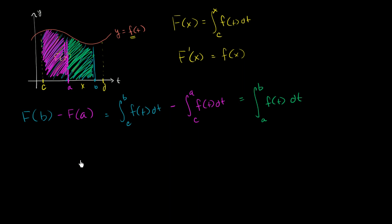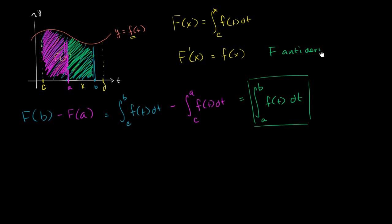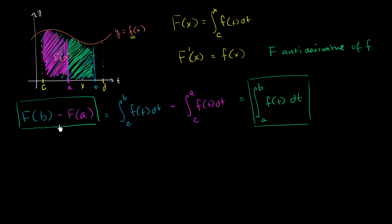This right over here is the second fundamental theorem of calculus. It tells us that if f is continuous on the interval, this is going to be equal to the antiderivative — or an antiderivative — of f. And we see that capital F is the antiderivative of f. The fundamental theorem of calculus tells us that capital F is an antiderivative of lowercase f. So if you have a definite integral like this, it's completely equivalent to an antiderivative evaluated at b, and from that, you subtract it evaluated at a.